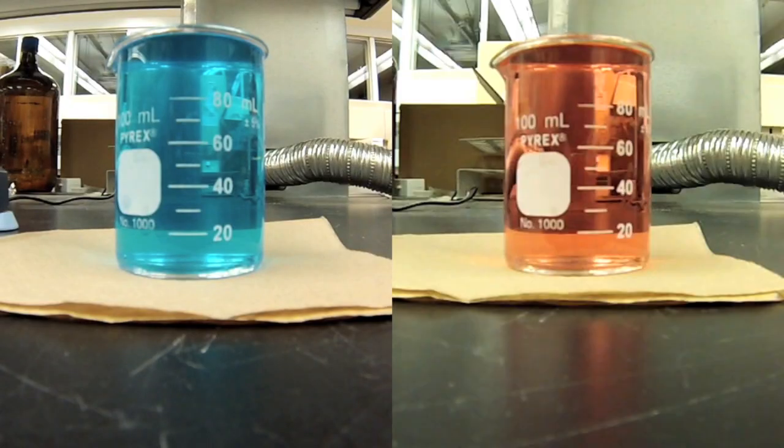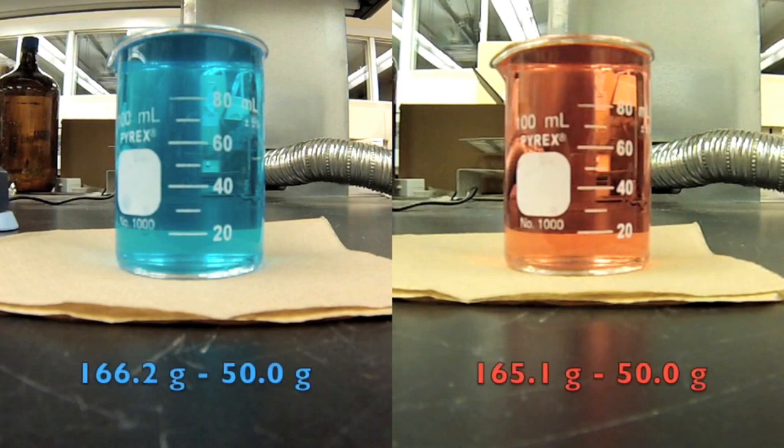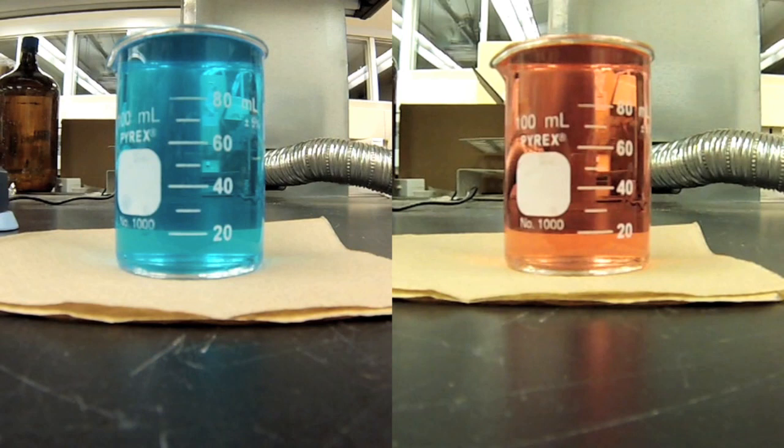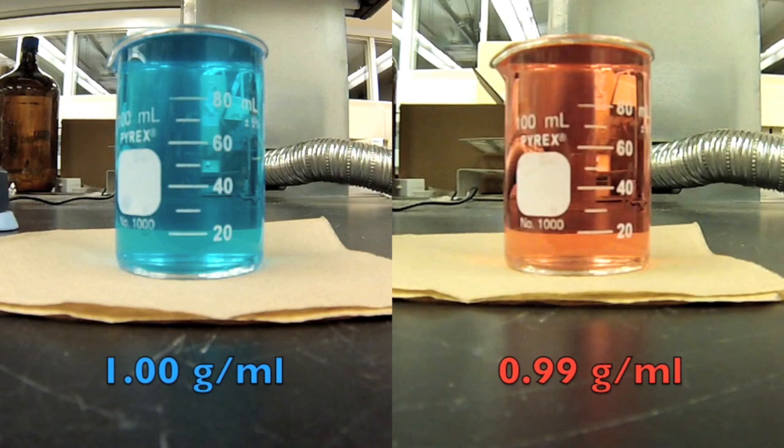We can calculate the density of these two samples by dividing the mass by the volume. First, we need to correct our previous measurement by subtracting out the mass of the empty beaker. This gives us 116.2 grams for the cold water and 115.1 grams for the warm water. Now we divide by the volume of the beaker to get a cold water density of 1.00 grams per milliliter and a warm water density of 0.99 grams per milliliter.